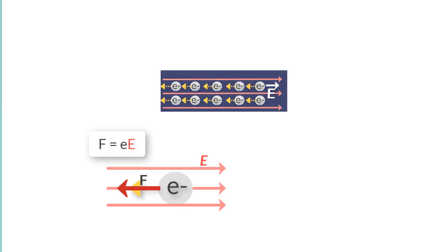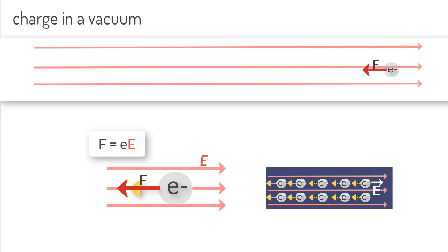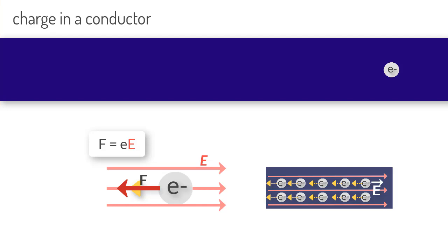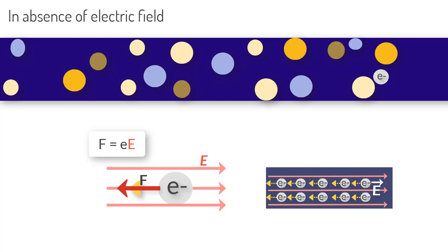Now, if this electron was in vacuum, we know that the force F would have accelerated the charge and it would have gathered speed. But this does not happen when the charge is in a conductor. That is, the electron does not speed up. The reason for this is quite simple. What happens is that as the electrons move forward, they constantly collide with impurities in the conductor and the ions of the material that are stationary. These collisions randomly change the velocity of the electrons so that the net velocity becomes zero.